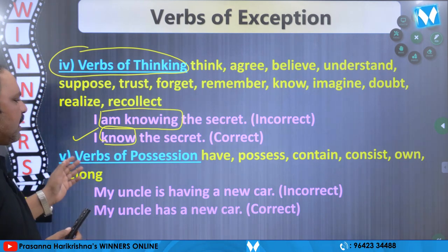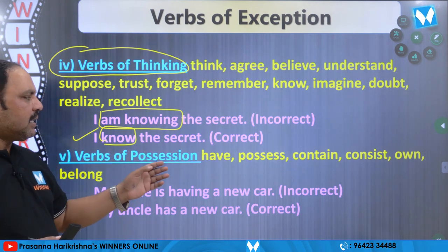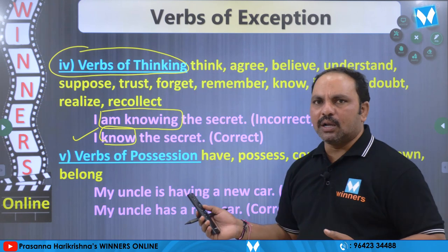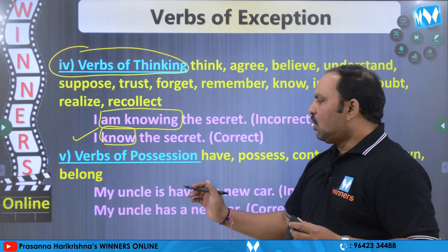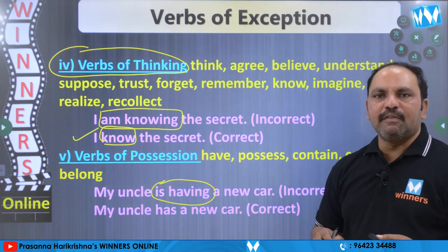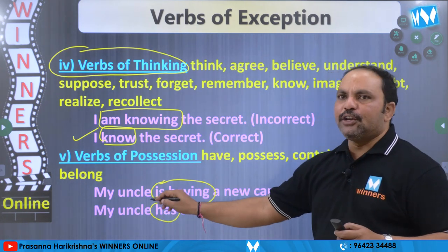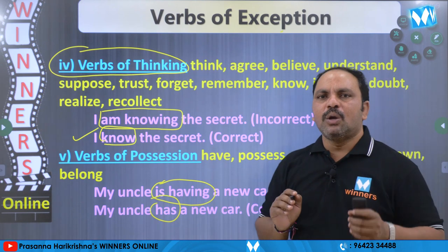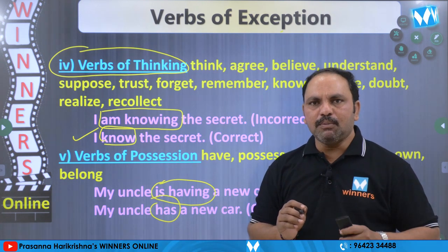Last one: verbs of possession — possession kaligundataniki sammandhinche verbs: have, possess, contain, consist, own, belong. Ivi verbs of possession avutai kabatti present continuous lo vaadamu. Udaharanakki: 'My uncle is having a new car' — this is incorrect. The correct one is: My uncle has a new car. So these are called verbs of exception. Aidhura kaala verbs cheppukunnaamu — ee five types of verbs ki present continuous form undadhu, simple present tense form untundhi.